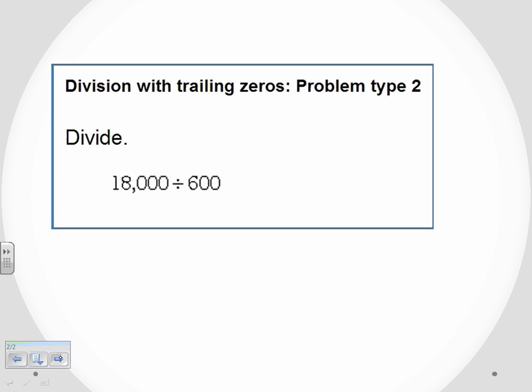We are still doing division, and in this case, both numbers actually have some trailing zeros. So we've got 18,000 divided by 600.